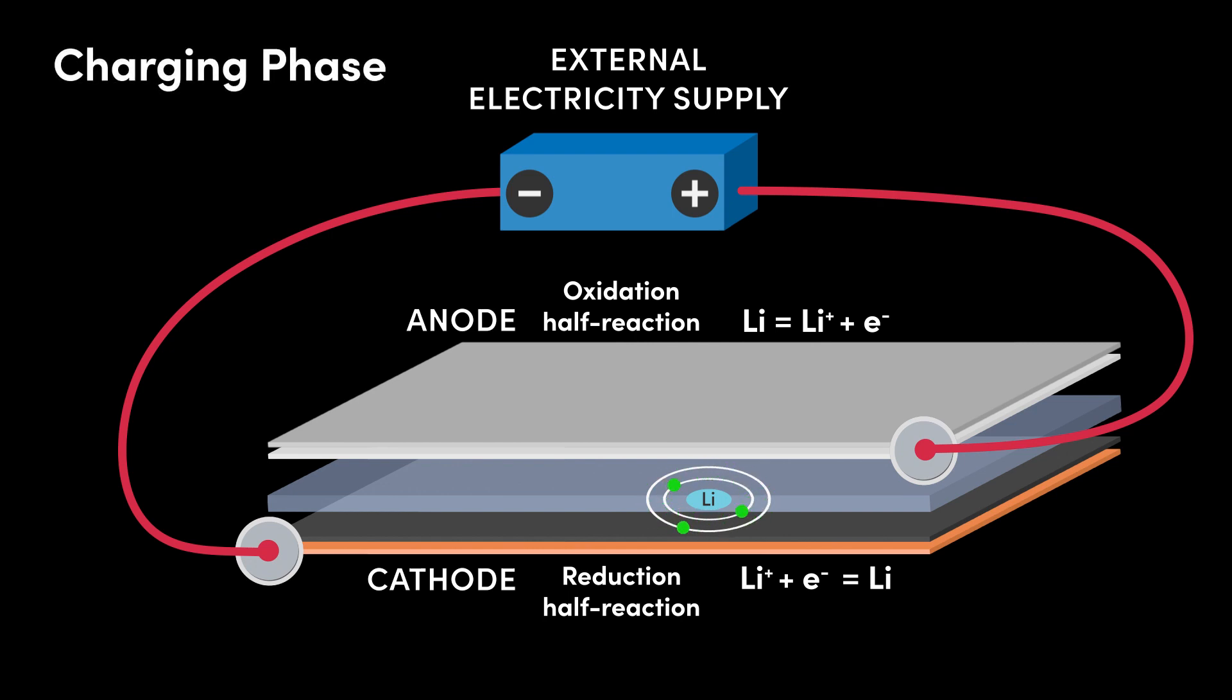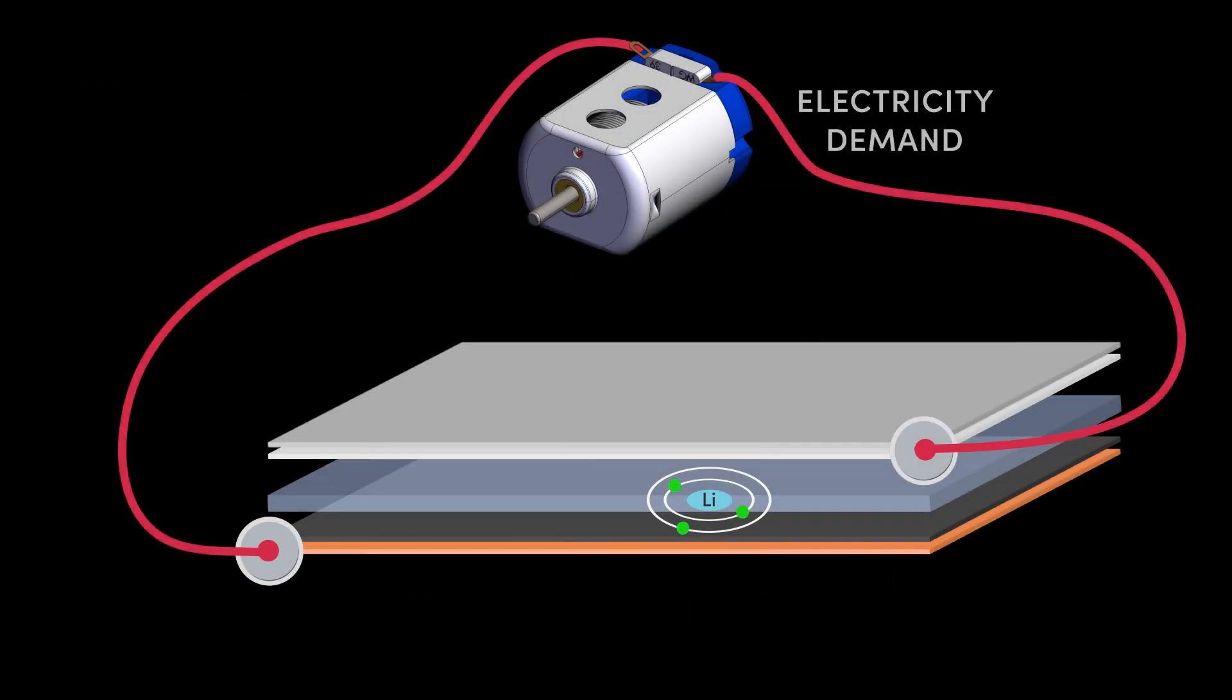We are now good to unplug from the mains power supply and go to use our battery cell, for example in our smartphone or even in our electric vehicle. When an electricity demand, such as our little DC motor here, is placed in the circuit between the two terminals of the cell, the process that we have just seen happens in reverse. This is called the discharging phase.